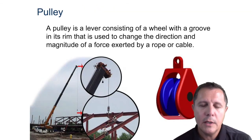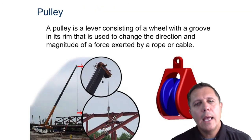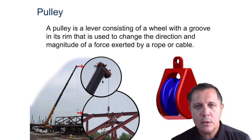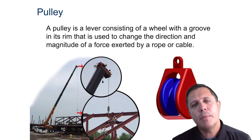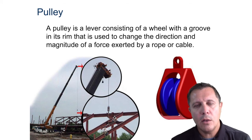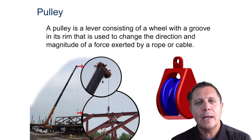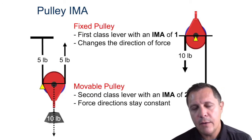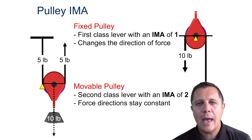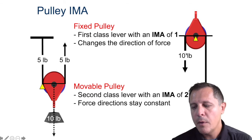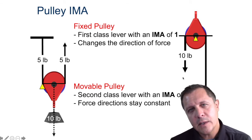Pulleys — a pulley is a wheel where you could have a rope or chain. It can change the direction of the force, and with multiple pulleys we can have an IMA greater than one and lift something really heavy more easily. Now, if it's a fixed pulley, you don't actually have less force — notice in the picture I have 10 pounds being lifted with 10 pounds. That is a fixed pulley.